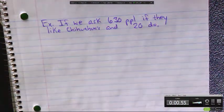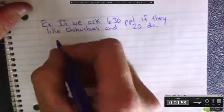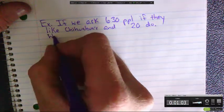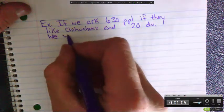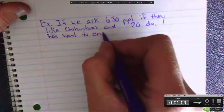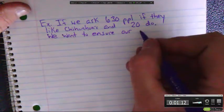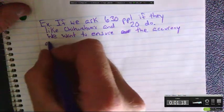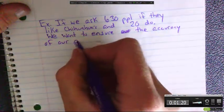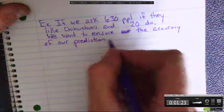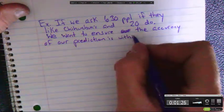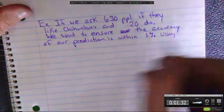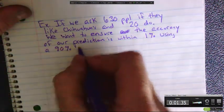If we ask 630 people if they like chihuahuas, 626 do. We want to ensure the accuracy of our prediction is within 1%. I'm using a 90% confidence here.